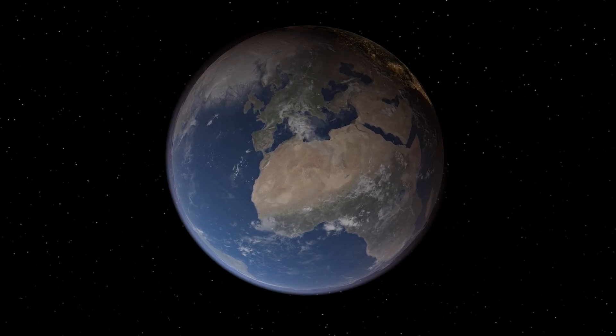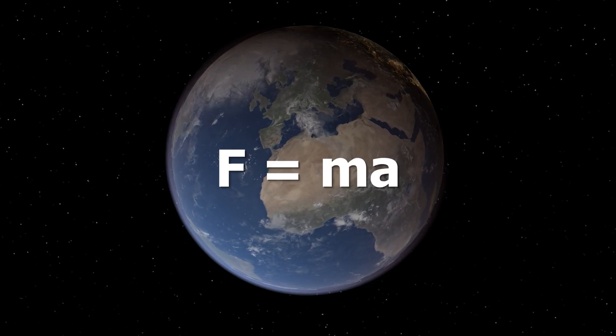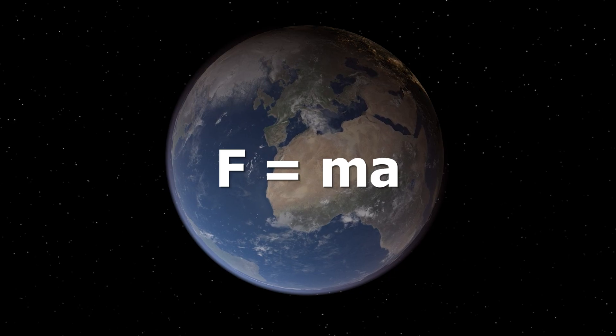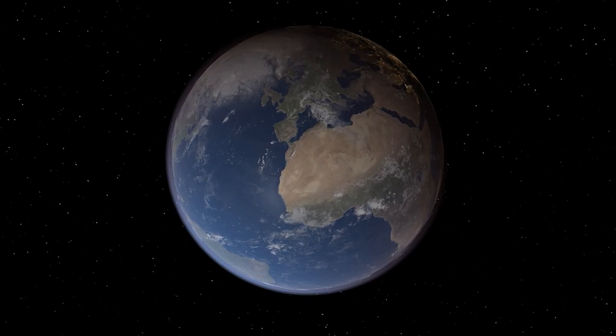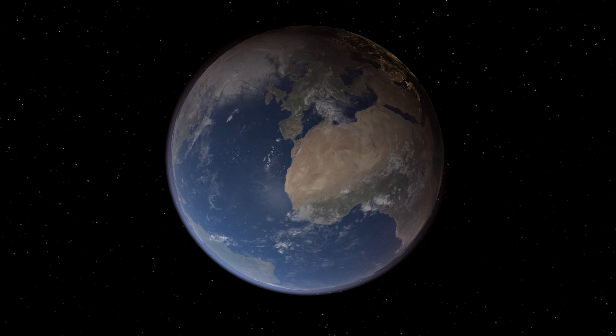Imagine shooting a ball out of a cannon and placing the target right where Newtonian physics tells you it should be. But instead the ball hits Canada. Uranus was deviating from its proposed orbit and no one knew why.